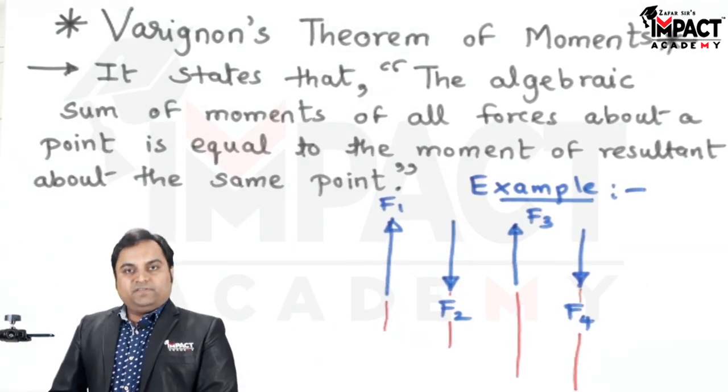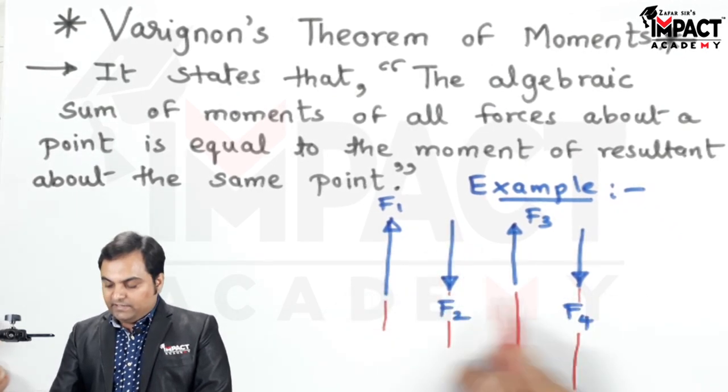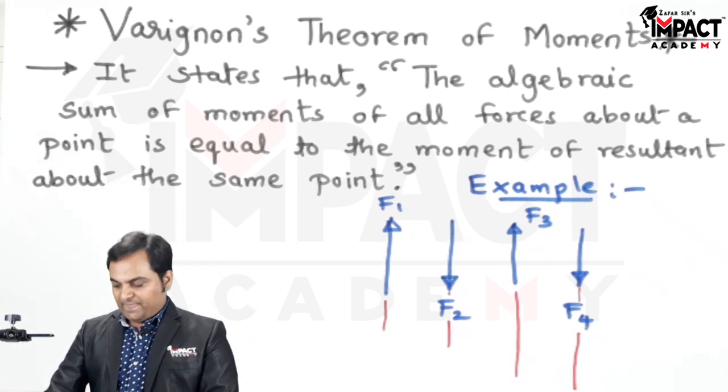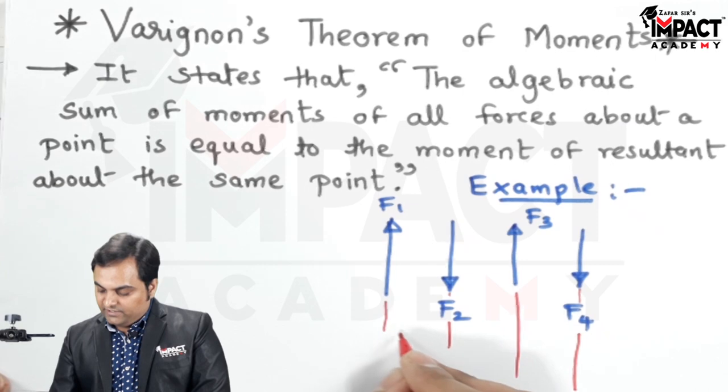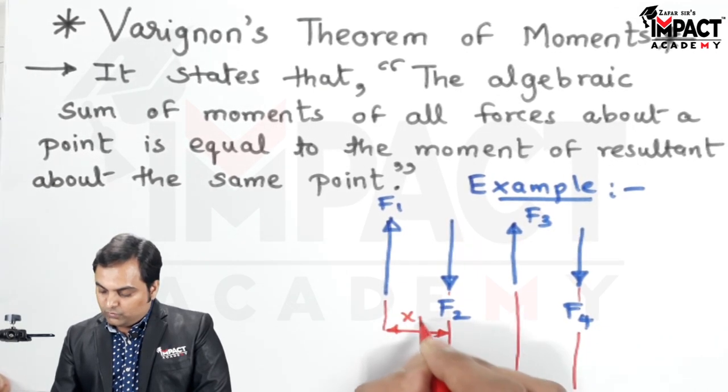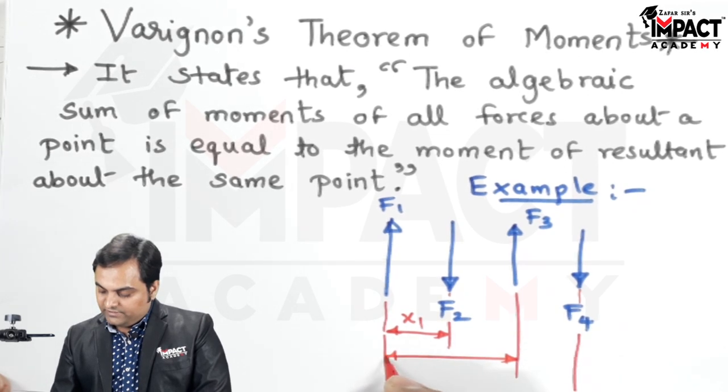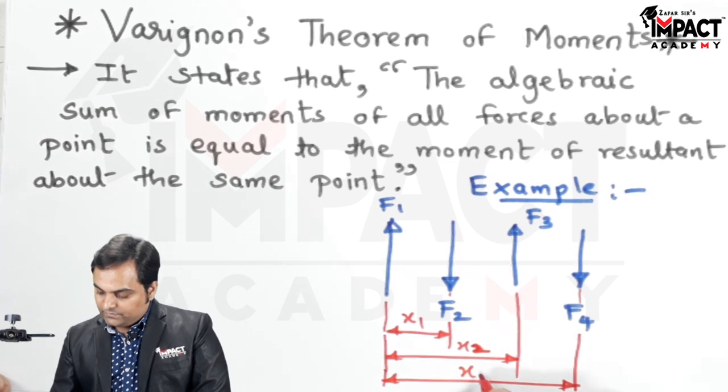Here there is an example in which we have four different forces. These are unlike parallel forces and they are non-concurrent forces as we can see here passing through different points. The distance between force F1 and F2, I am denoting it as X1, then between F1 and F3 that is X2, and between F1 and F4 that is X3.